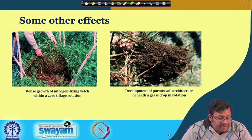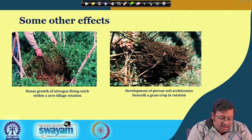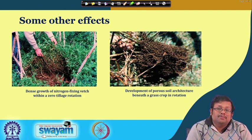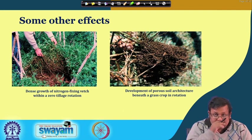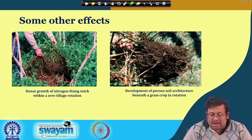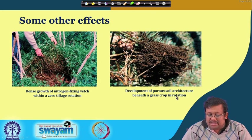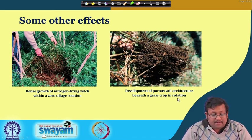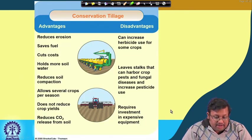Additional effects visible under conservation tillage practices include a dense growth of nitrogen-fixing plants within a zero-tillage rotation. This dense growth helps anchor the soil and prevents soil particles from moving with runoff. There is also development of a porous soil architecture beneath a grass crop in rotation, which facilitates more water movement and reduces the chances of runoff.